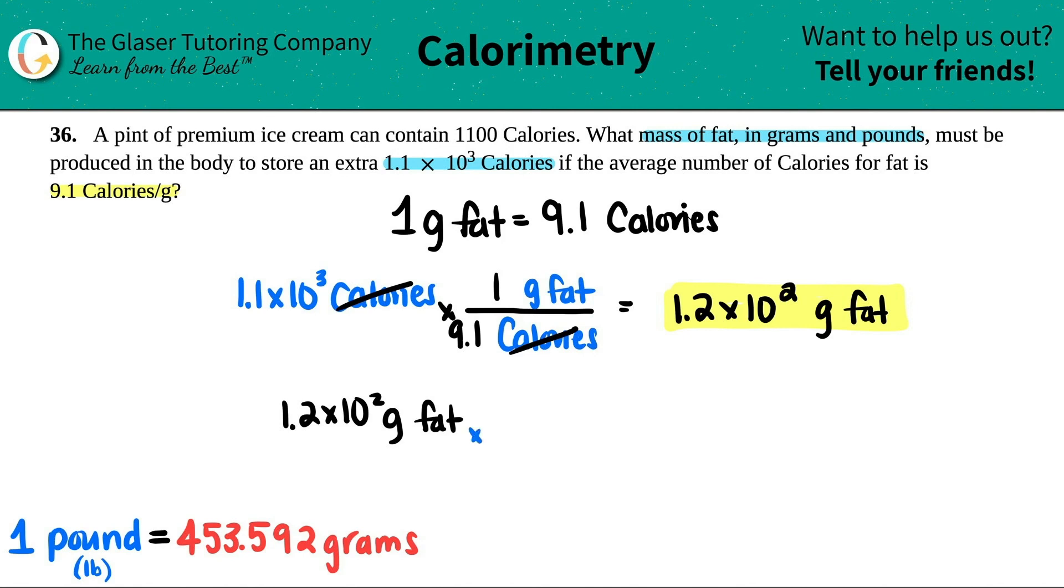Same thing as before, times by the ratio. Throw the unit you don't want on the opposite side, so grams goes on the bottom and pounds of fat on top. According to this, one pound equals 453.592 grams of fat. Cancel out grams, we're left with pounds of fat. That would be the second answer. 1.2 times 10 to the second divided by 453.592, and we get 0.26 pounds of fat.